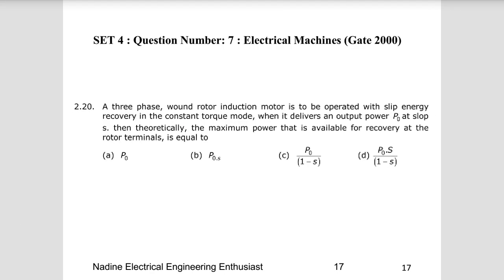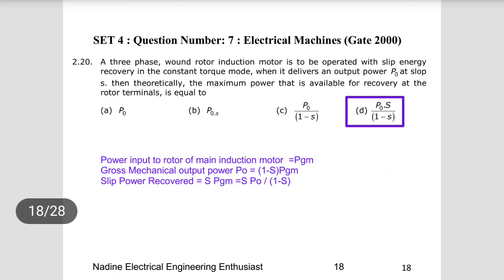Question 7: A three-phase wound rotor induction motor is operated with slip energy recovery in constant torque mode. When it delivers output power P0 at slip s, find the maximum power available for recovery at the rotor terminals. The gross mechanical power is P0 = (1 − s) × Pgm, so the slip power = s × Pgm. Since Pgm = P0/(1 − s), the recoverable slip power = s·P0/(1 − s). Choice D is the right answer.